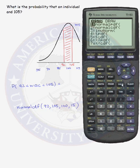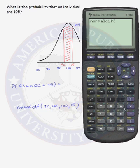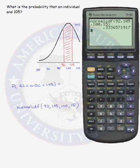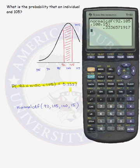Go to 2nd, VARS, down to number 2 in the calculator. Enter lower bound 92, upper bound 105, a mean of 100, and a standard deviation of 15. This gives us a probability of about 33%. So the probability that our WISC score will be between 92 and 105, when scores are normally distributed with mean 100 and standard deviation 15, is approximately 33%, and our three probability calculations using the calculator are complete.